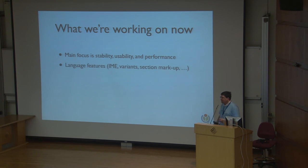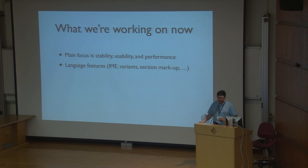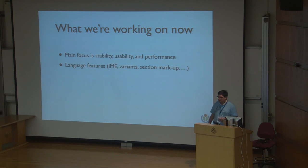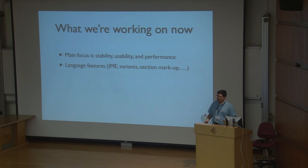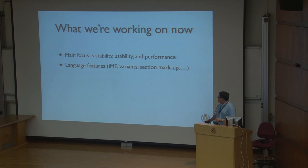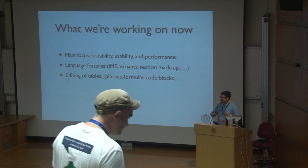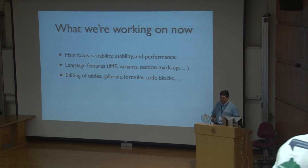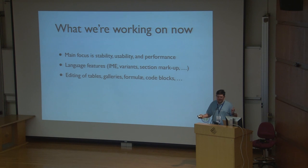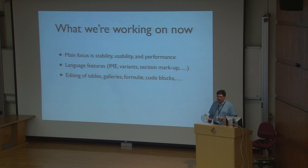As we've touched on, language features are a priority — IME editing, language variants, things like section markup. It's very important to support as many wikis as possible. We don't want to get a year down the track and then find that when we've made it available in Chinese, we have to delete everything and start again. Then obviously editing the things you can't currently edit — galleries, tables, citations, formulae, and things like that — making those available is a priority so people can edit everything rather than just the things they currently can.